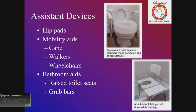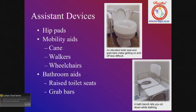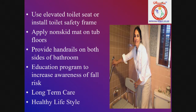Assistive devices to use include hip pads — important since hip fractures are very common in elderly and lead to multiple surgeries with significant financial burden. Mobility aids include canes, walkers, and wheelchairs. Bathroom aids such as raised toilet seats and grab bars are essential. Use elevated toilet seats, install toilet safety frames, apply non-skid mats on bathroom floors, and provide handrails on both sides of the bathroom. An education program to increase awareness of fall risk, long-term care, and healthy lifestyle is very important.